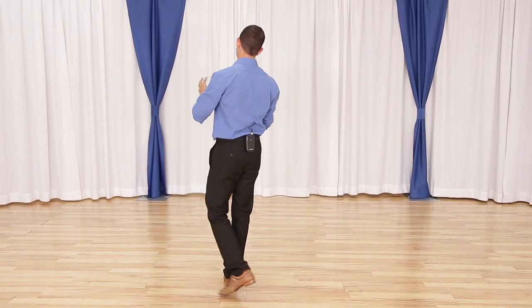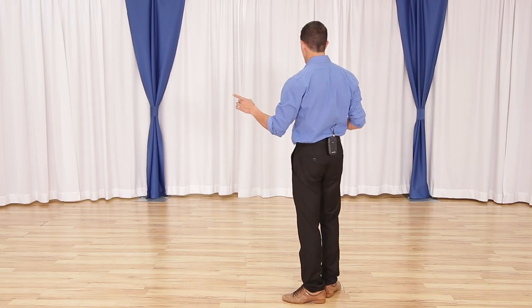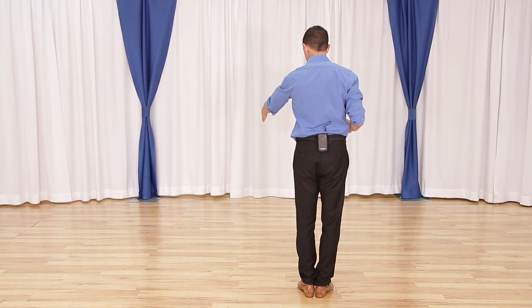But the second thing that happens in East Coast Swing is we're rotating around the room. But to be clean in our dancing, I don't want to make rounded steps in my East Coast Swing. I want to make everything linear. So to do that, I'm going to practice a box with my triple steps.